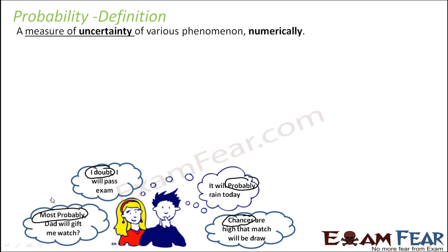There is a chance — maybe she is 90% sure her dad will give her a watch. She is maybe 40% sure she will pass the exam. Based on the weather forecasting report, there is maybe 80% certainty it will rain today, and for the draw maybe it is 70%. Because it is not concrete, we use probability to measure this uncertainty and we give some numbers.